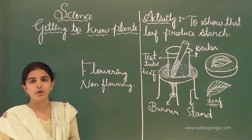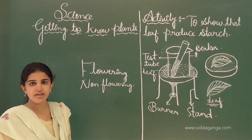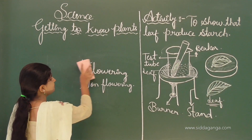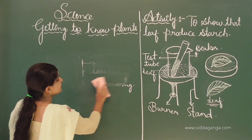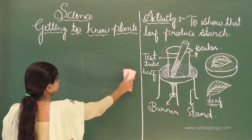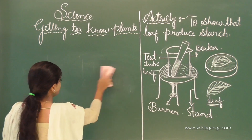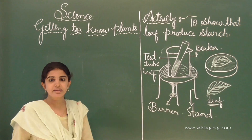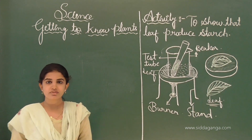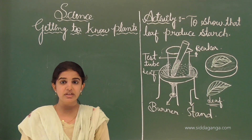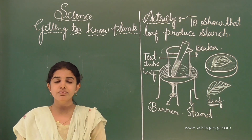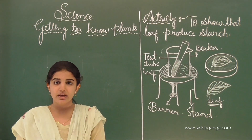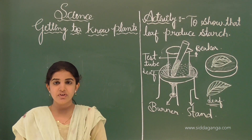Plants can be divided into flowering as well as non-flowering plants. Plants are living entities and which is very important for us. Plants produce oxygen which is very important for living organisms — not only human beings, but also birds and different types of animals.